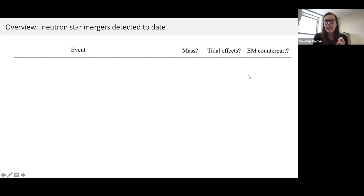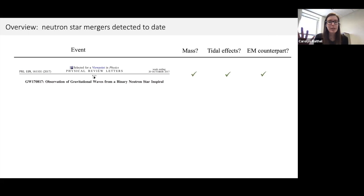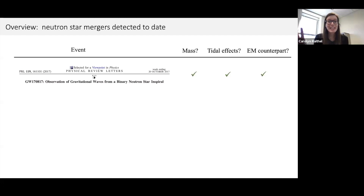We can also look for an electromagnetic counterpart, which is expected to be observed for many neutron star merger cases. The first event, GW170817, checks all three boxes: masses clearly consistent with neutron star masses, a strong detection of tidal effects in the inspiral waveform, and a brilliant EM counterpart with a gamma-ray burst and associated kilonova. So this is pretty conclusively a binary neutron star merger.